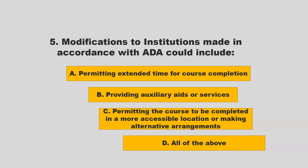Modifications to institutions made in accordance with ADA could include permitting extended time for course completion, providing auxiliary aids or services, permitting the course to be completed in a more accessible location, or making alternative arrangements — D, all of the above. If you chose D — all of the above — you are correct.